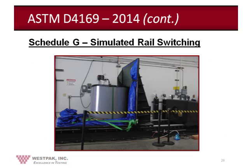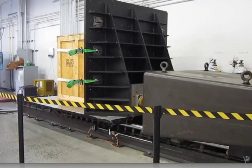Here's a photo of the package system being secured on the horizontal impact tester and ready for testing. This piece of equipment — the HITS — is capable of rail car switching impact levels of 12 miles per hour with either standard draft gear or the cushioned undercarriage draft gear. We have a video to show how the simulated rail switching test inputs are conducted.